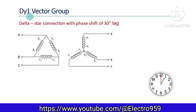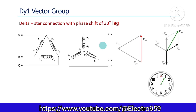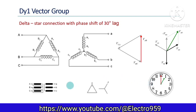Now the DY1 vector group. The primary is delta connected and the secondary winding is star connected. Since line voltage VAB is taken as reference for the primary side, VAB must be considered for the secondary side also. In the star-connected secondary, VAB is obtained by VA minus VB, and the VAB phasor is obtained as shown. Here also the secondary voltage is lagging by 30 degrees from the primary side — the one o'clock position applies here as well. The simplified connection diagram and displacement diagram clearly represent the delta-star connection and the 30-degree lagging phase angle.